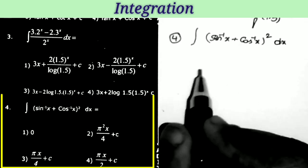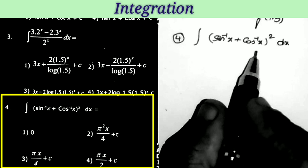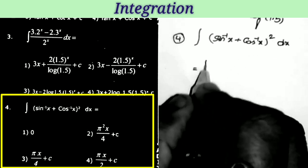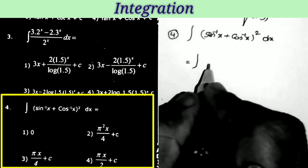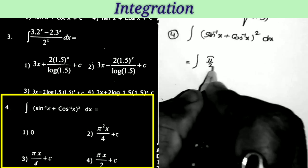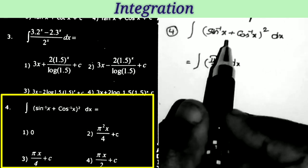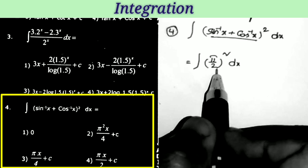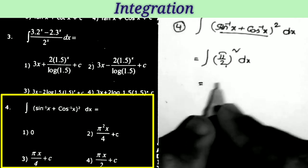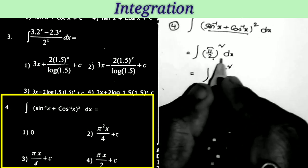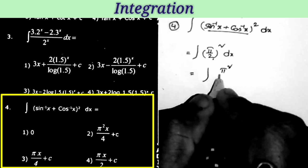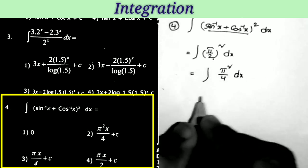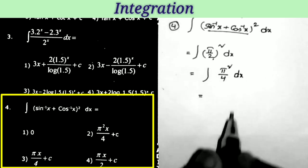Next question: integral of (sin⁻¹x + cos⁻¹x)² dx. This equals — sin⁻¹x + cos⁻¹x = π/2 by formula. So this equals integral of (π/2)² dx = integral of (π²/4) dx, which is in the form of integral k dx.